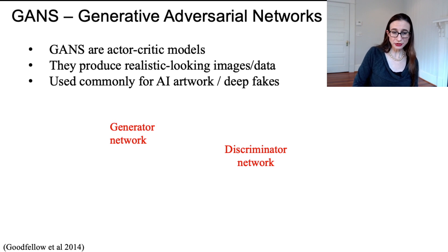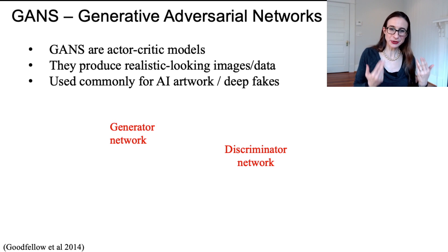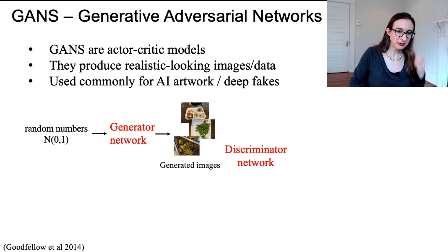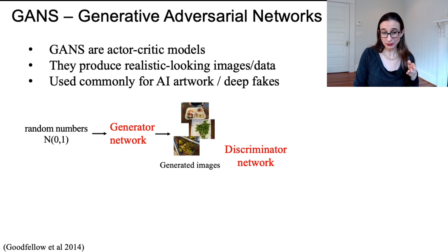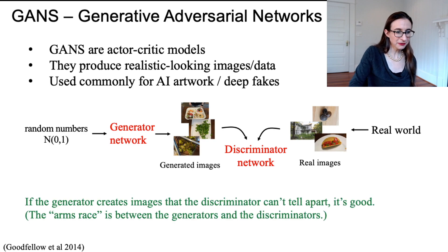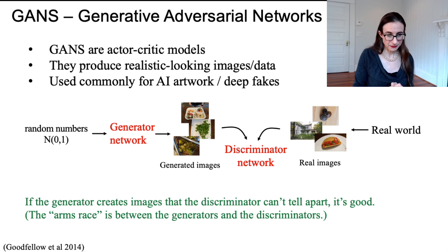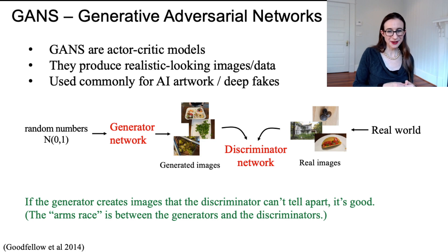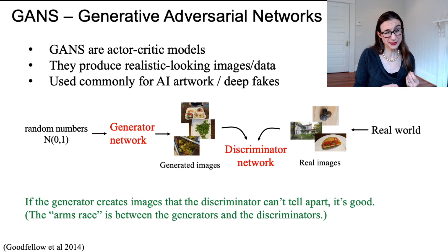The actor and critic are a generator network and a discriminator network — two neural networks working against each other. The generator tries to generate images: you put random numbers in and it generates realistic-looking random images. The real world is also generating images, and the discriminator's job is to tell them apart. If the generator produces images that the discriminator cannot distinguish from real images, the generator is good. Building a better discriminator only serves as a better critic for the generator, helping it improve as well.